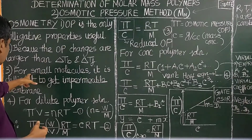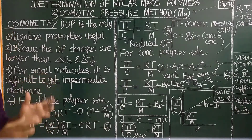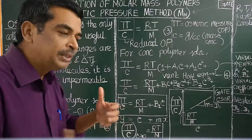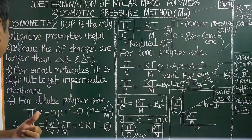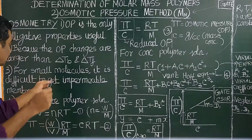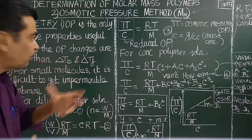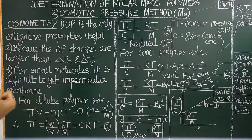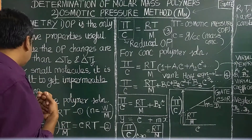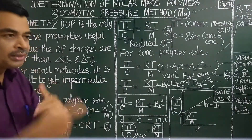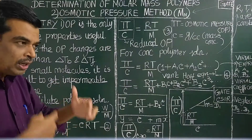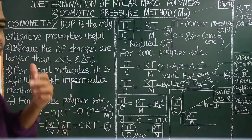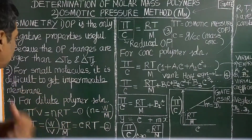Another useful point is that for small molecules it is very difficult to find an impermeable semi-permeable membrane, whereas for macromolecules and polymers it is easy to get an impermeable membrane. In osmosis, there is only a flow of solvent from high concentration to low concentration due to diffusion.